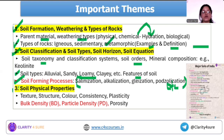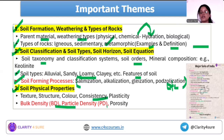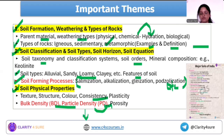Soil physical properties include texture, structure, color, consistency, and plasticity. Bulk density (BD) and particle density (PD) are important, as is their relation with porosity — for example, as porosity increases, BD decreases. There will be conceptual questions on these relationships.